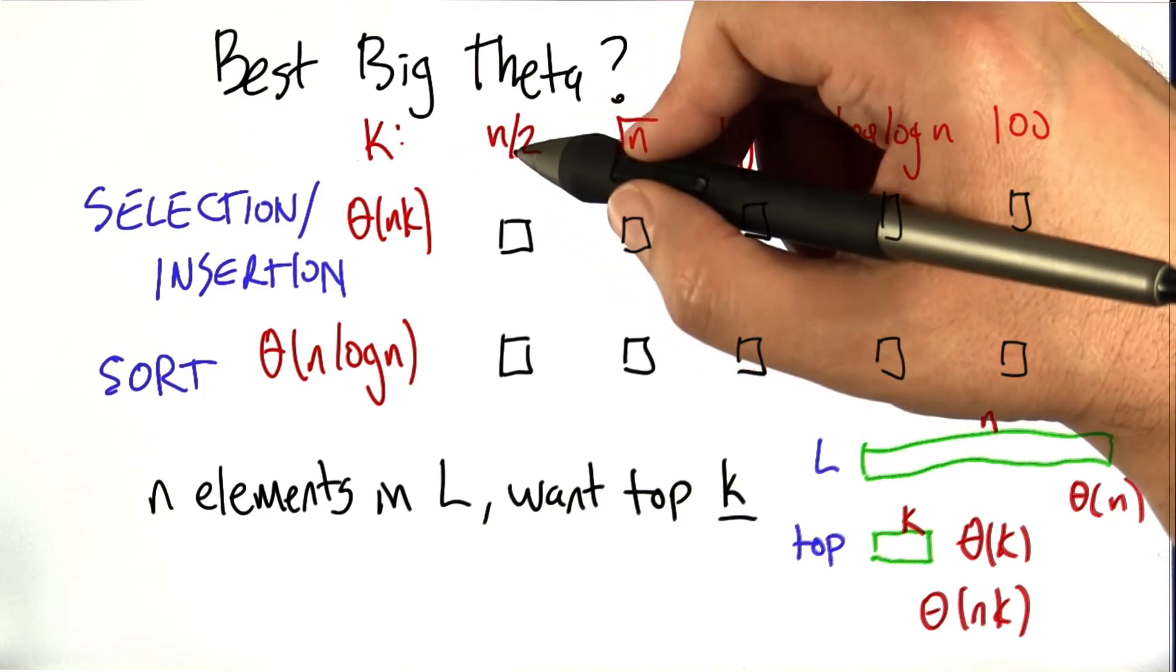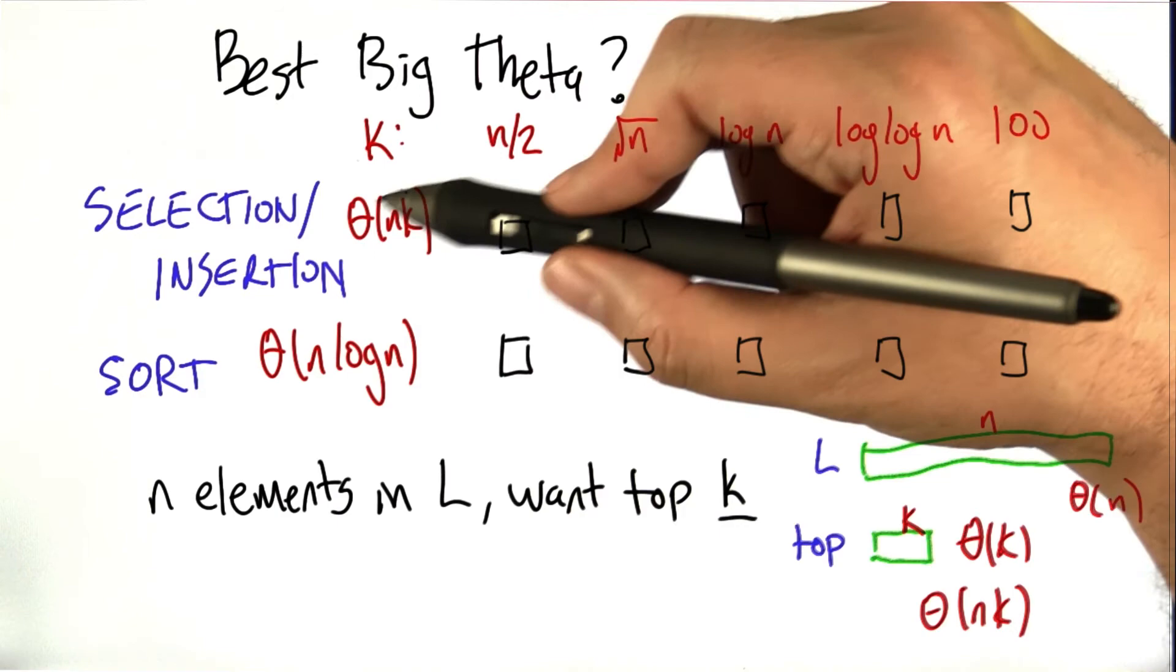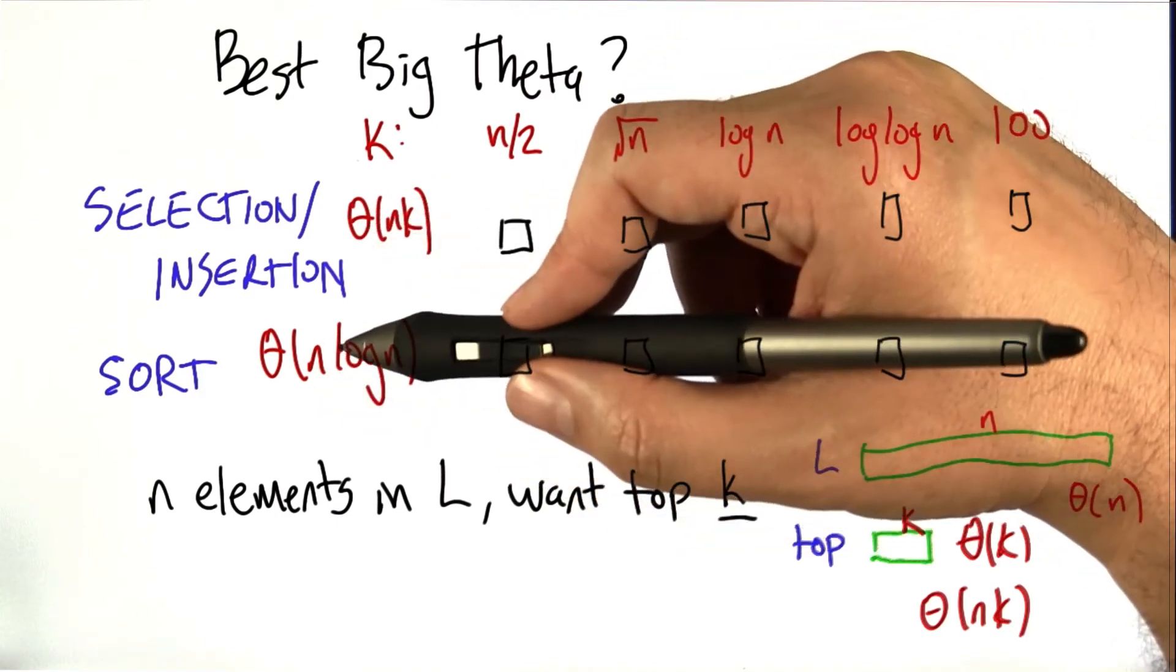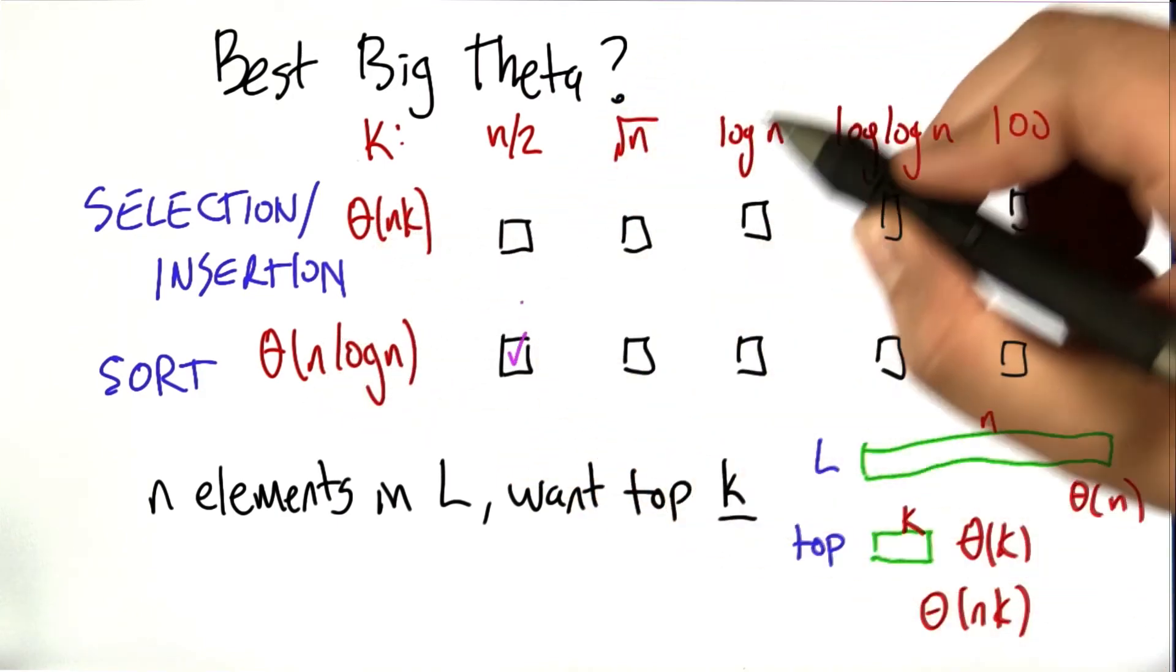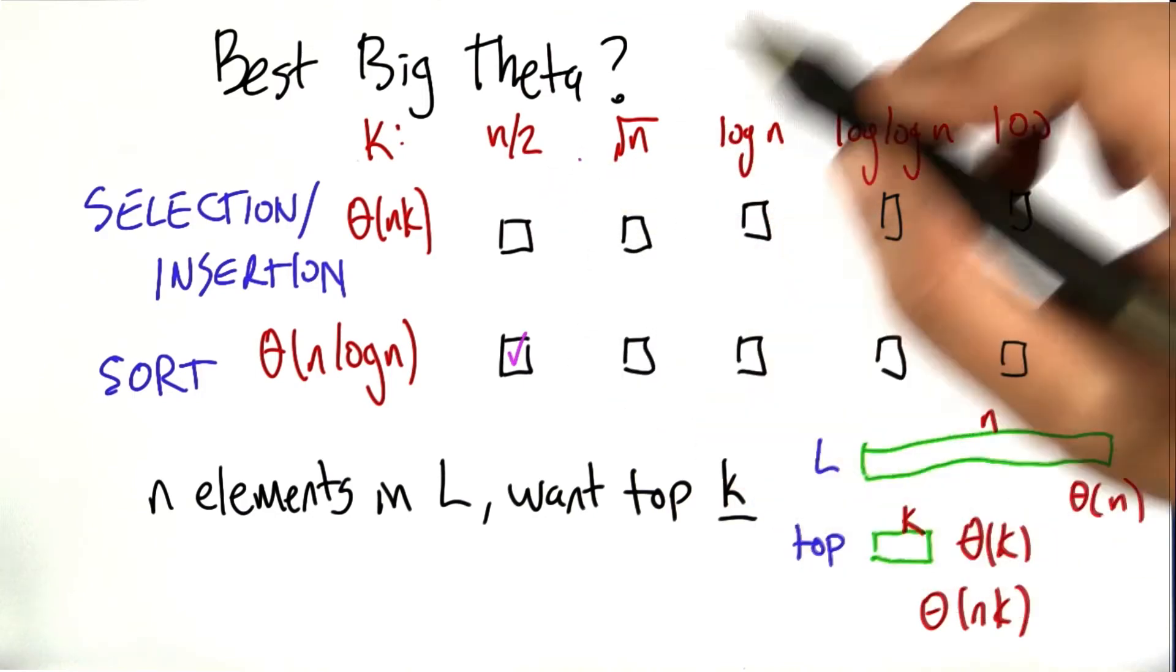Now, if k is n over 2, that's n times n over 2, or n squared. This is big theta of n squared. This is big theta of n log n. We're much better with n log n. So if it's a very long list that we're wanting the top values of, you might as well just sort the whole thing.